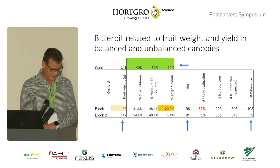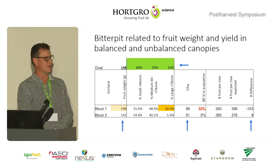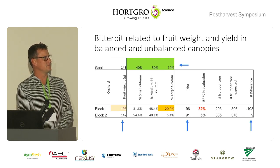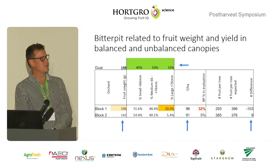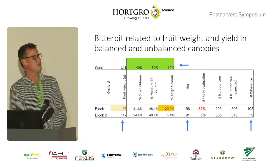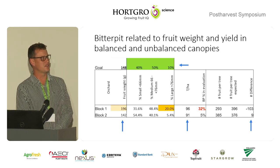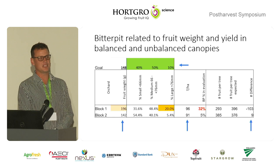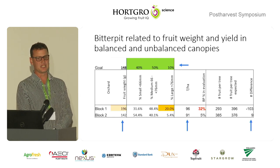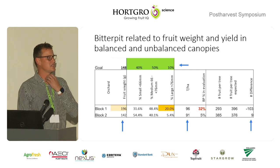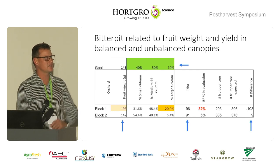Let's look at bitter pit, which was already mentioned for the past season. I would like to compare two blocks — block one and two. Both of them cropped fairly well. You can see the tons per hectare produced: we had 96 tons and 91 tons per hectare. However, one of these blocks had 32% bitter pit, and this was evaluated at forced or hot room shelf life temperatures, so 5% is really pushing it to the limit. I would consider this really like a normal season with almost no bitter pit, but compared to that block, we can see a big problem.